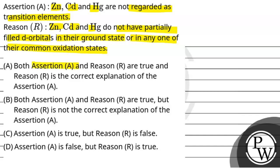The first option is: both assertion and reason are true, and reason is the correct explanation of assertion. Second: both assertion and reason are true, but reason is not the correct explanation of the assertion. Third: assertion is true, reason is false. Fourth: assertion is false, reason is true.